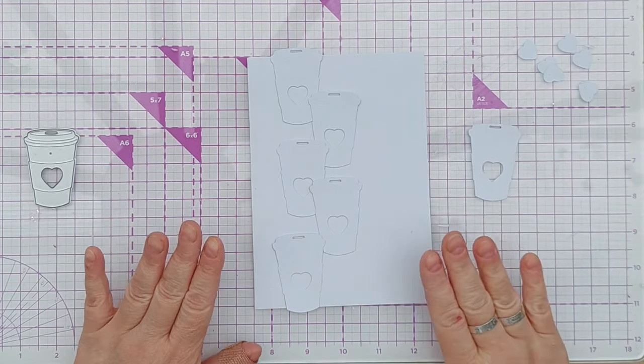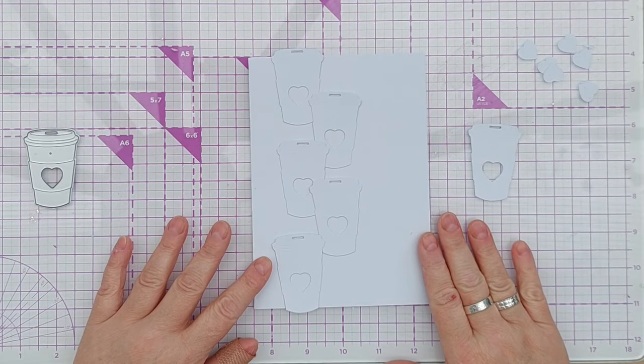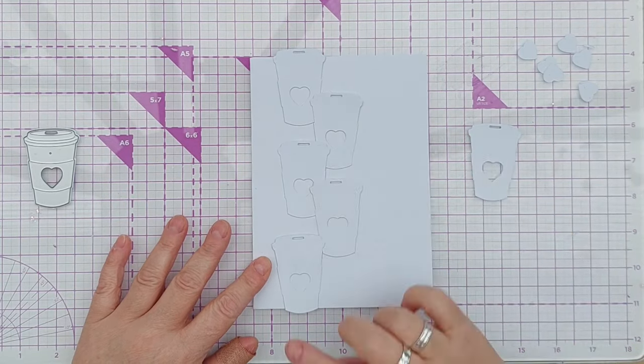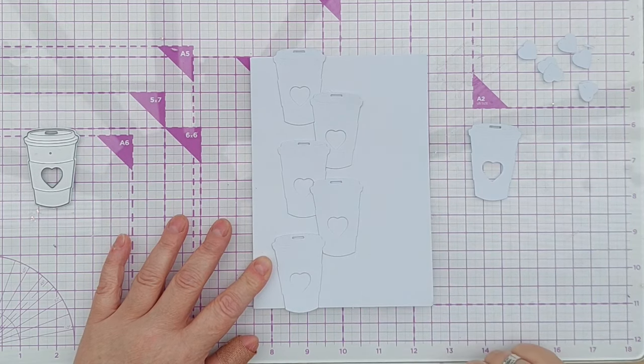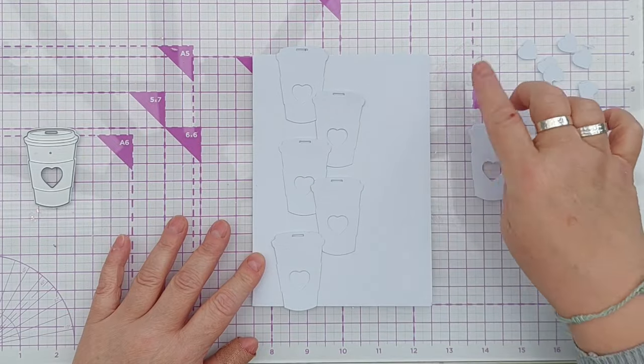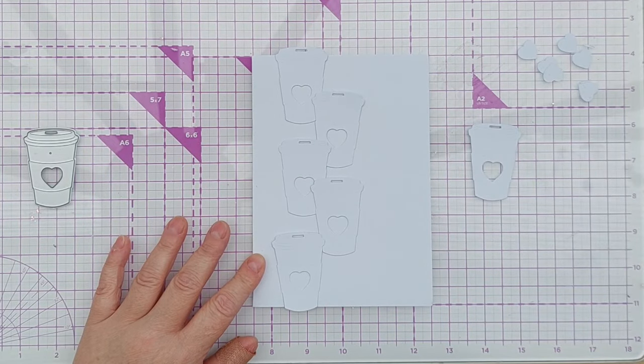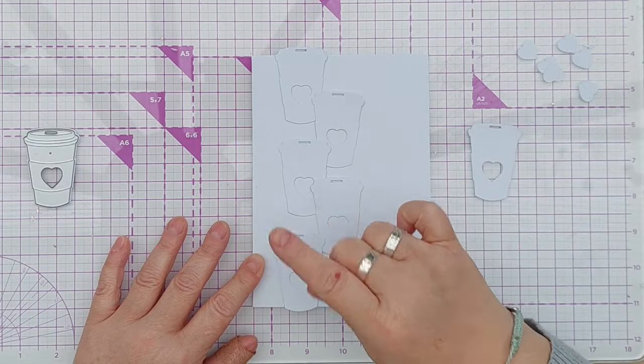So I've got six coffee cups cut out and I'm thinking of having five white ones on the front of my card cascading down. I'm wondering about putting a panel on first. I think I'll do that, I think it needs a little bit something.